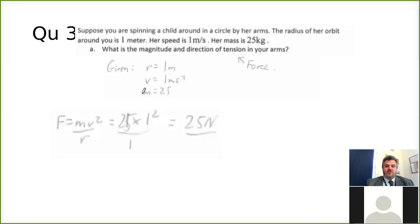Using the same formula as before, force is mass times speed squared over radius. You've got to get used to using that. So the mass is 25, speed is one, one squared is one, one over one is the same. So the answer comes out to be 25 newtons. That's the centripetal force. The direction of tension in your arms is going to be towards the child. If you think about it, you're having to provide that centripetal force. So you'll feel the reaction force as you're trying to pull on the child.